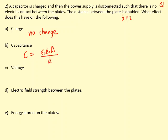Since none of the other factors have changed, capacitance is inversely proportional to d — so doubling the distance halves the capacitance. For voltage, using Q = CV rearranged to V = Q / C: since capacitance halves and Q is fixed, voltage doubles, due to the inverse relationship.